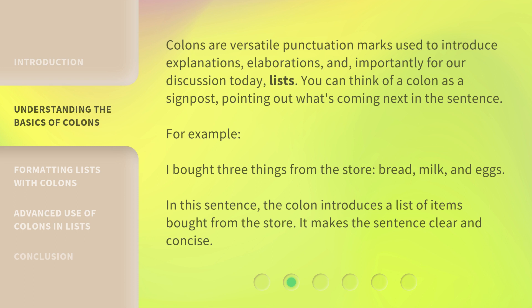For example: I bought three things from the store — bread, milk, and eggs. In this sentence, the colon introduces a list of items bought from the store. It makes the sentence clear and concise.